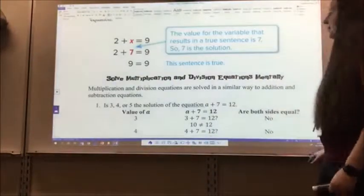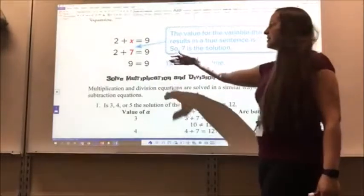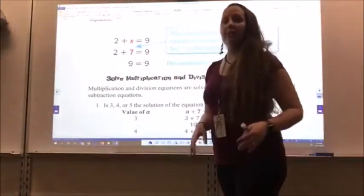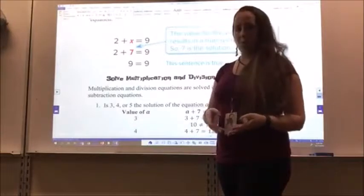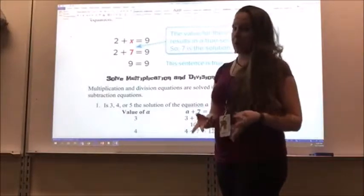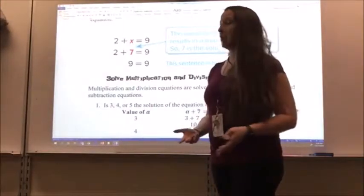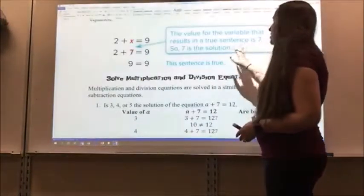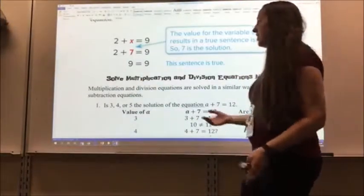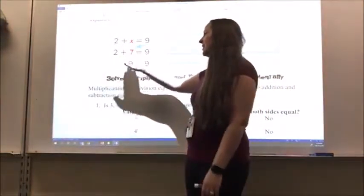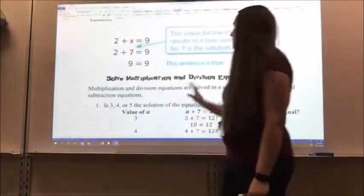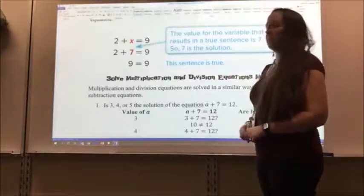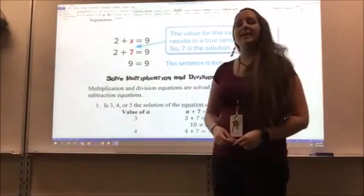All right, so I have an example here. Two plus x equals nine. You can tell it's an equation because it has an equal sign. That's what makes it an equation. Otherwise, it's just an expression. The value for the variable that results in a true sentence is seven. Because two plus seven equals nine. So this sentence is true. So my value for x is seven.